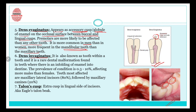Dens invaginatus is also known as 'tooth within a tooth.' It involves a lingual pit extension and is an in-folding of enamel into the dentine. It is a rare dental malformation with prevalence of 0.3 to 10 percent, affecting mostly males. The teeth most affected are maxillary lateral incisors in 80 percent of cases, followed by maxillary canines in 20 percent of cases.